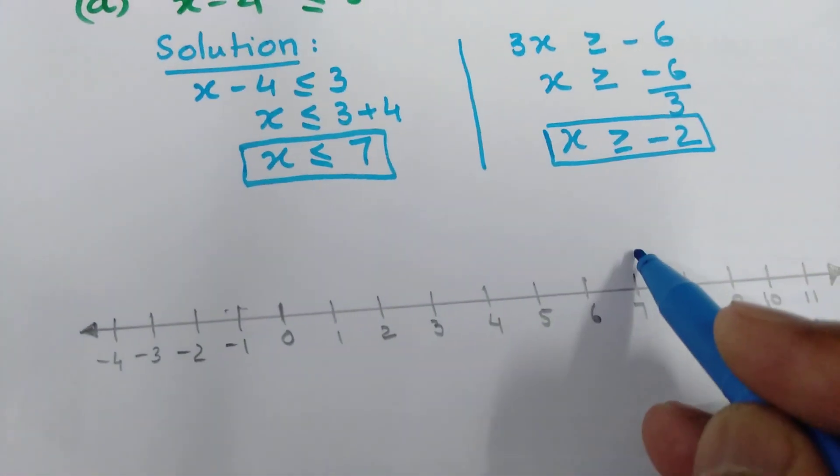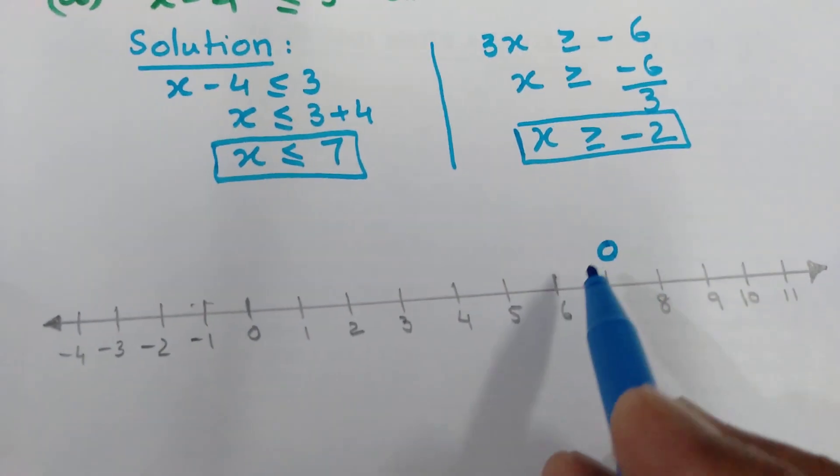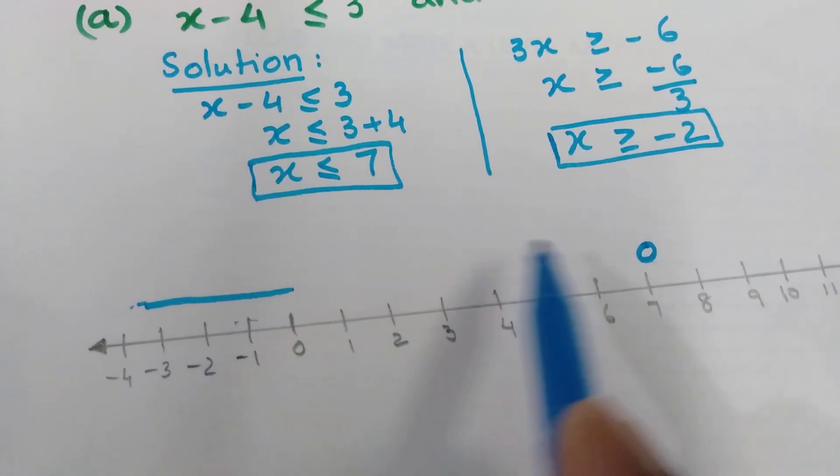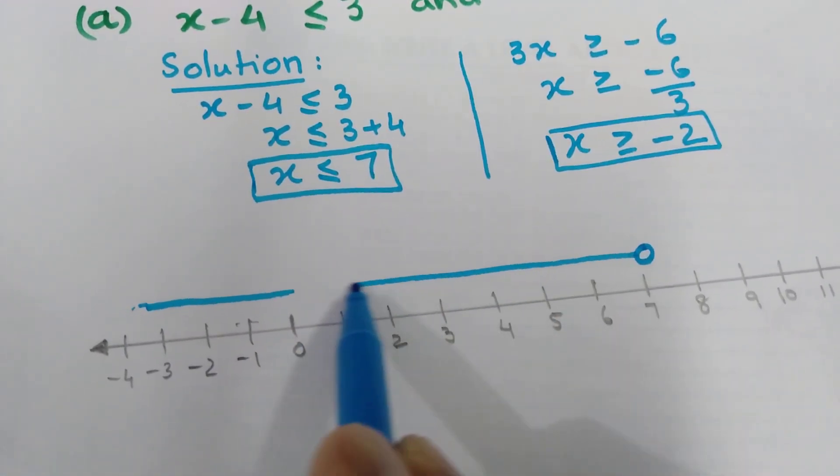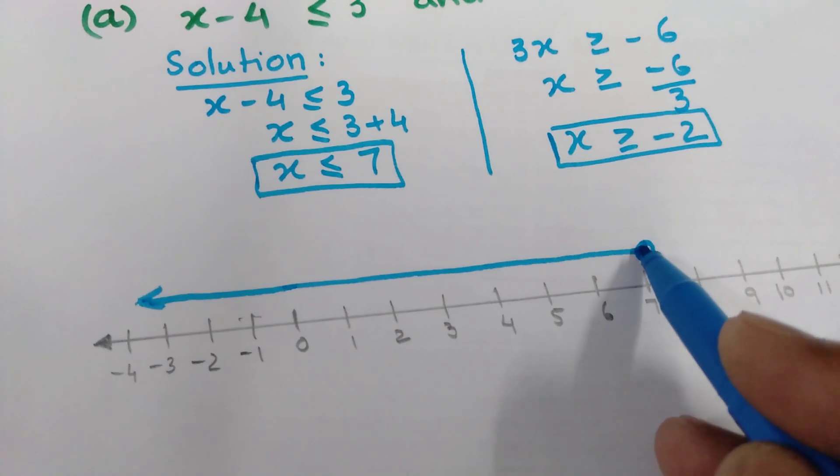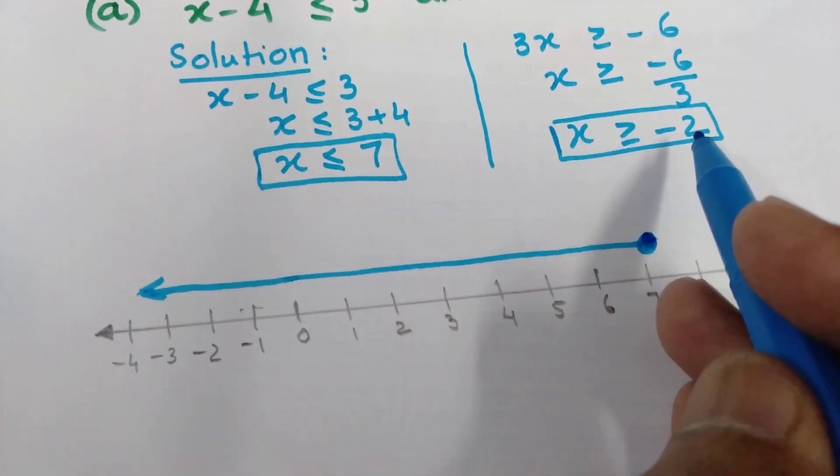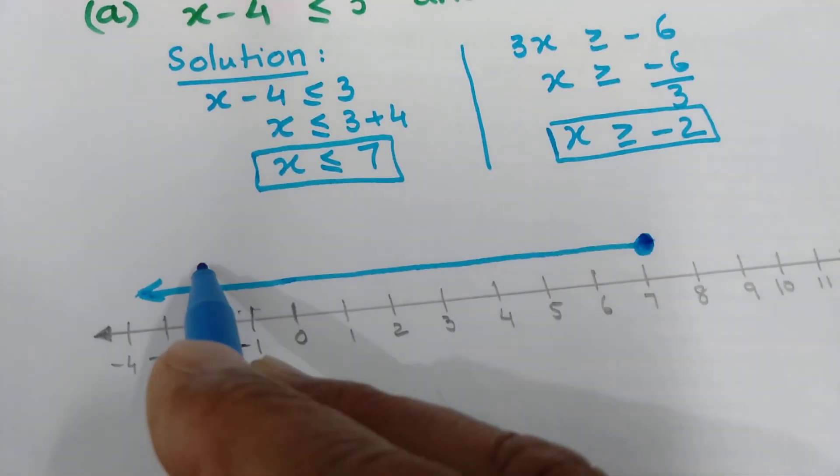x is less than or equal to 7 means all values which are less than 7 will be these values, and it will be a solid circle.